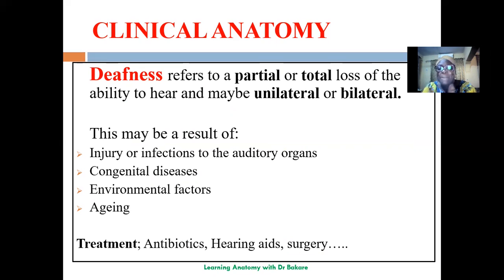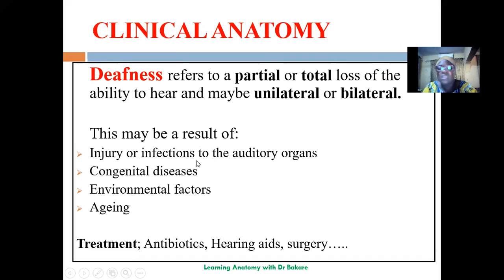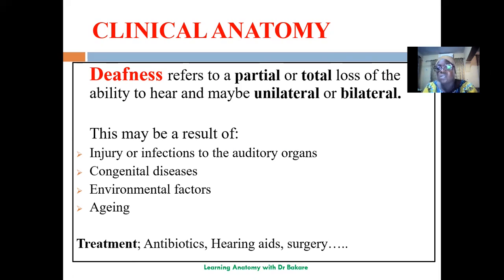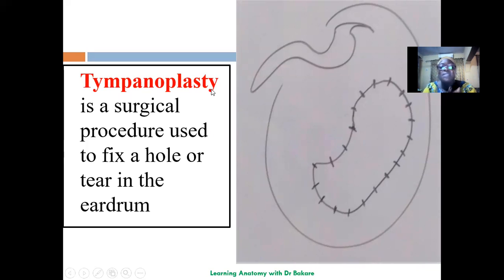In clinical anatomy, deafness is very common — it is a partial or total loss of the ability to hear, which may be unilateral or bilateral. It can occur as a result of infection, congenital malformation, environmental factors such as prolonged exposure to loud noise which can damage the organ of Corti, or age. Treatments include antibiotics, hearing aids, or surgery depending on the cause. One surgical procedure is tympanoplasty, which addresses the tympanic membrane — the eardrum. It is used to fix a hole or tear in the eardrum by drafting tissue from other parts of the body to cover the damaged area.